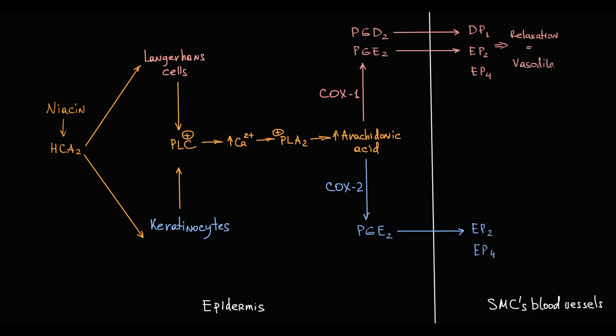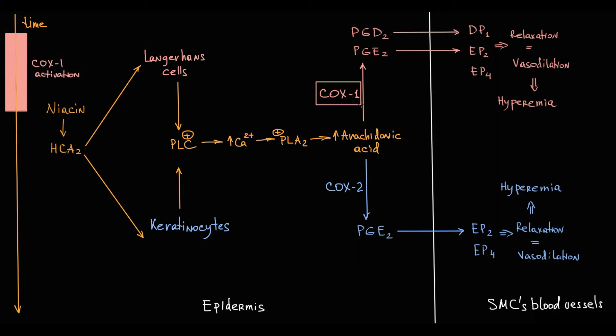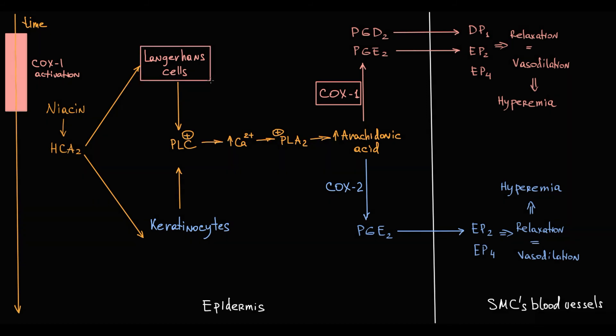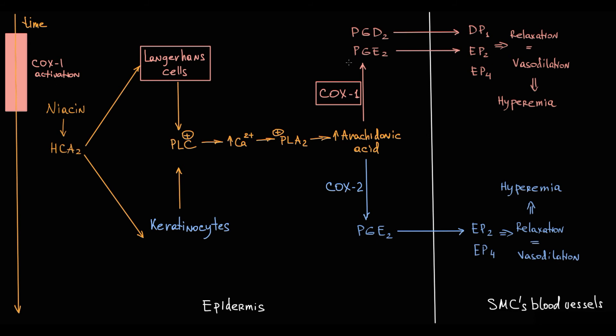This results in vasodilation and vasodilation manifests with a flash of hyperemia. Also important is that COX-1 enzyme in Langerhans cells becomes activated first. Because of that, initially in response to niacin, Langerhans cells react first. They very rapidly produce large amounts of prostaglandins, primarily prostaglandin D2, that immediately cause a flash of hyperemia.